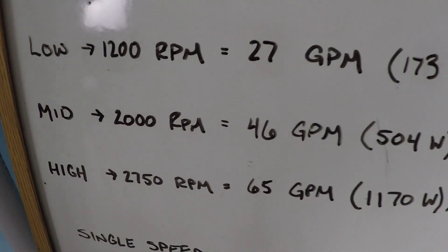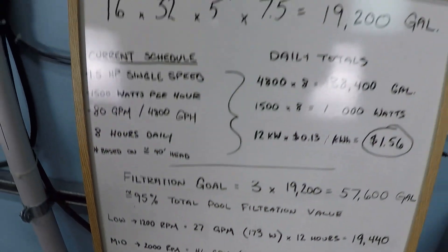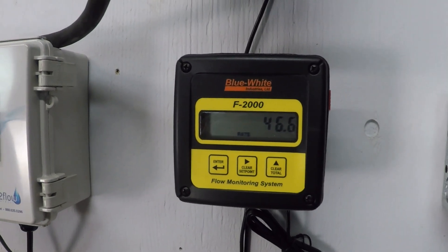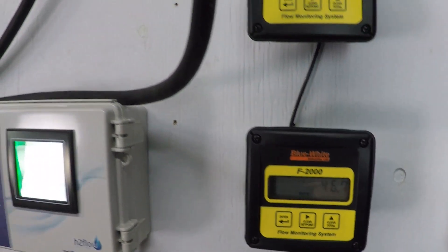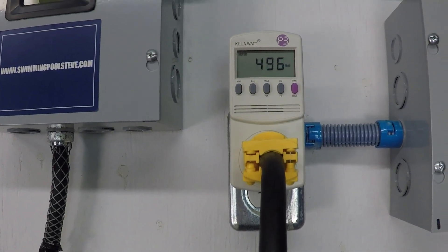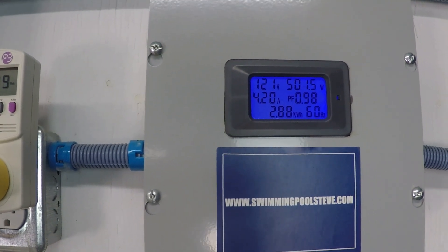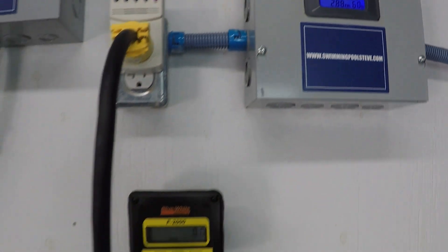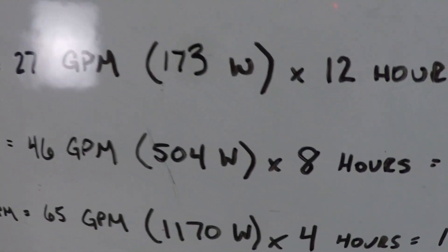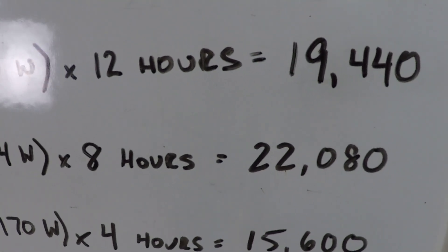Here we're looking at 2000 RPM, and we're expecting to see about 500 watts and about 46 gallons per minute, which is what this system is able to achieve. Just over 46, almost 47, just over 500 watts. Over the course of 8 hours, we're achieving 22,080 gallons.